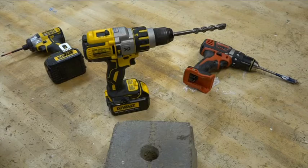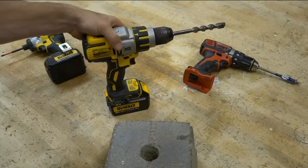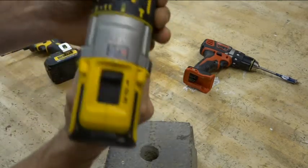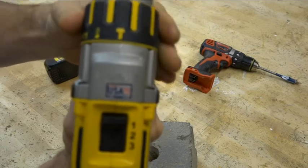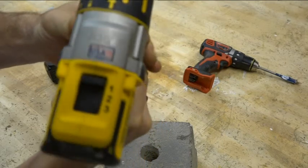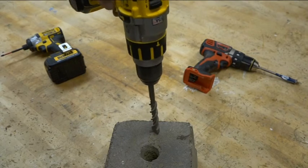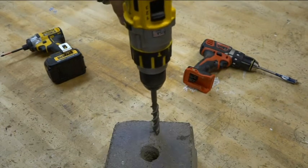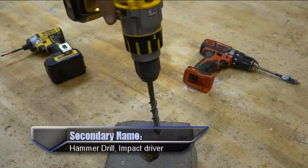The combination hammer drill is named that because it has a setting for drilling into masonry where the bit not only needs to spin, but it needs the chipping action by way of a hammering feature to break up the material.